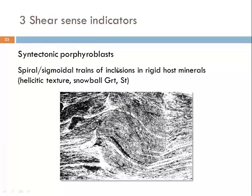Syntectonic porphyroblasts are crystals growing while being rotated in a ductile shear zone. Their syntectonic growth produces spiral sigmoidal trains of inclusions overgrown from the matrix — a helicitic texture, as in snowball garnets or staurolite. Such inclusion trails also form in andalusite, albitic porphyroblasts, and occasionally feldspar, but are most commonly observed in garnet and staurolite. When interpreting them, be careful not to confuse them geometrically with sigma or delta clasts.